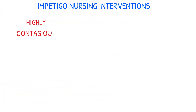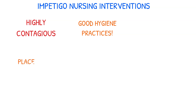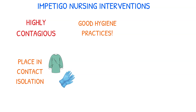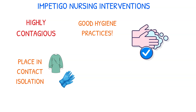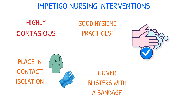Impetigo is very contagious, so preventing its spread is crucial. Good hygiene practices play a vital role in controlling the infection. We need to ensure that patients with impetigo are placed in contact isolation if hospitalized and precautions followed to prevent transmission to others. We should emphasize the importance of handwashing, especially after contact with the patient or their belongings. Covering the blisters with a bandage and advising the avoidance of scratching them can also reduce the risk of spreading the infection.